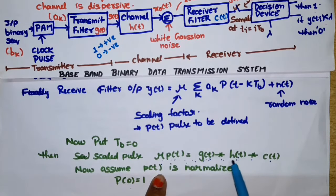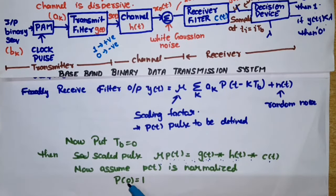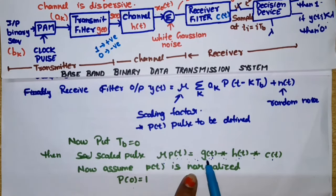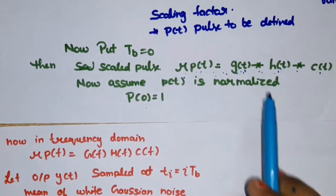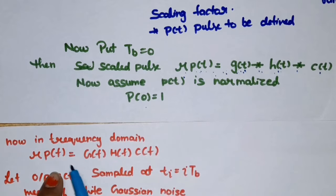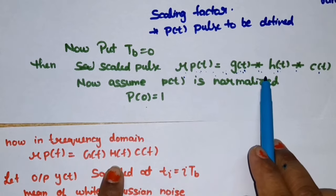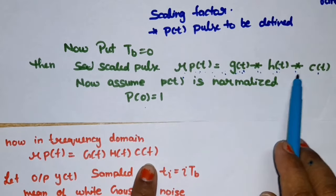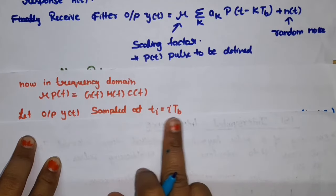The overall impulse response is μ·p(t) = g(t) * h(t) * c(t). We assume p(t) is normalized, meaning p(0) = 1. In the frequency domain, this convolution becomes multiplication of transfer functions: μ·P(f) = G(f) · H(f) · C(f), where G(f), H(f), and C(f) are the transfer functions of the transmit filter, channel, and receive filter respectively.